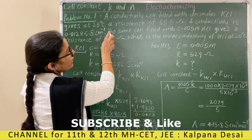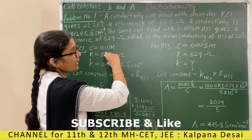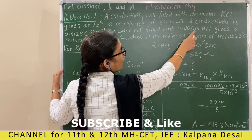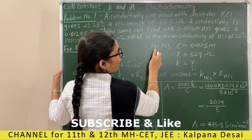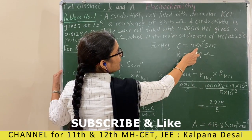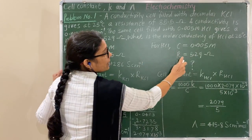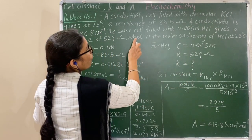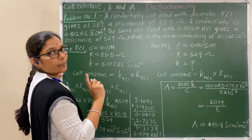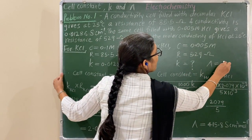Now, the same cell is filled with 0.005 molar SCL solution. For the SCL solution, the concentration is this one and it gives a known resistance. We want to find out the molar conductivity.